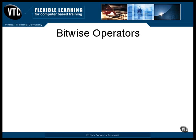There is one unary bitwise operator. The tilde character is the ones complement operator. It changes all the zeros to ones and all the ones to zeros.